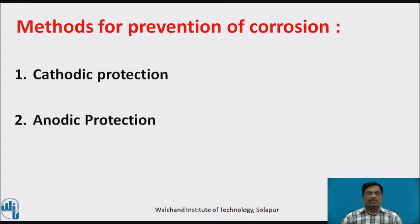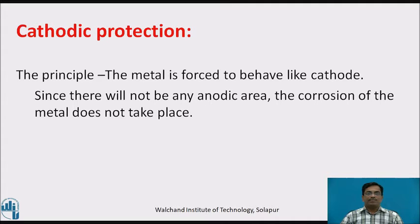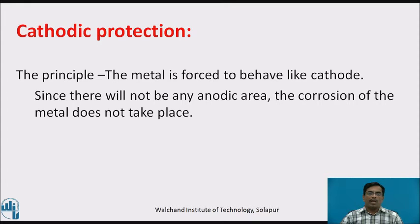The first method is cathodic protection and the second one is anodic protection. The principle behind cathodic protection is that the metal is forced to behave like a cathode. We know that for corrosion to occur there should be an anode and a cathode. The anode undergoes oxidation, that is it gets lost — that process is called corrosion. In this particular case, since there will be no anodic area, the corrosion of the metal does not take place.